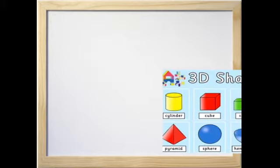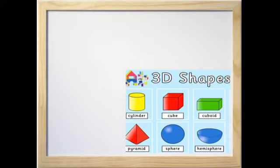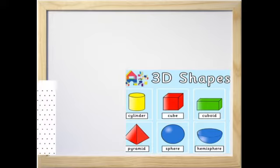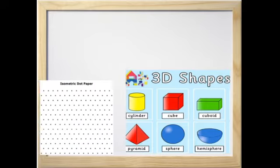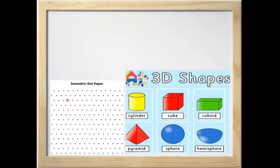Children, today we will be learning how to draw three-dimensional shapes on a two-dimensional paper. The paper which we are seeing here is an isometric dot paper.